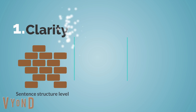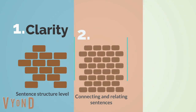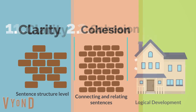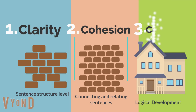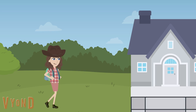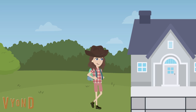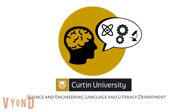Sentence structure level — that's clarity. Connecting and relating sentences — that's cohesion. And logical idea development — that's coherence. Okay, let's stay a little bit longer on the sentence structure level. Go to the next activity.